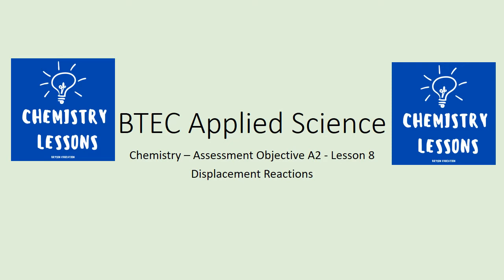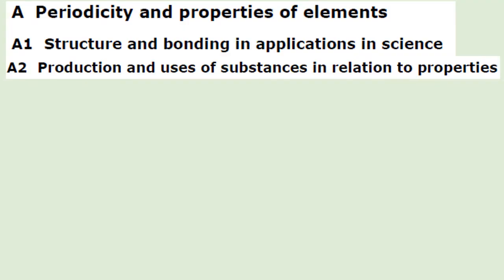This is a BTEC Applied Science video for Unit 1, Chemistry Assessment Objective 2. You're best off familiarizing yourself with the list, which I'll share with you shortly. This is the last lesson in a series of eight that covers Assessment Objective A2. The specification for Unit 1 is split into A, B, and C: A being chemistry, B being biology, and C being physics. For chemistry, it's split into Assessment Objective 1 and A2.